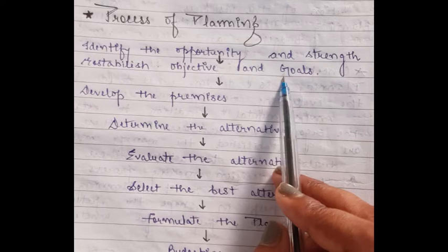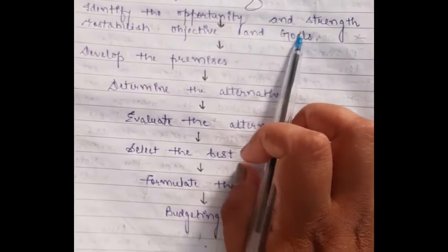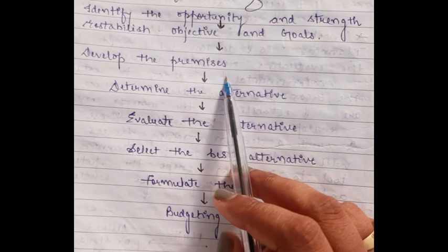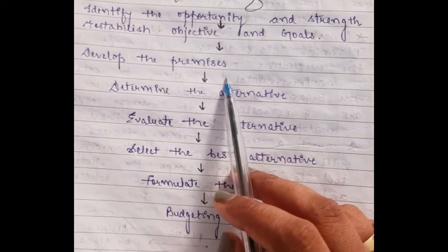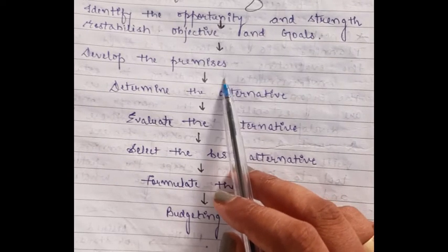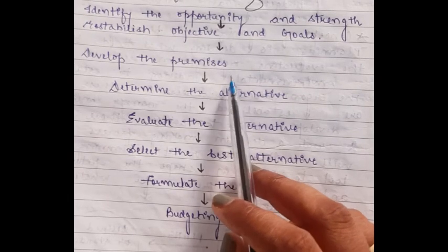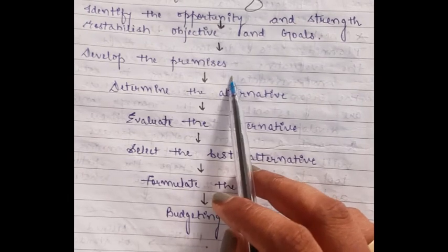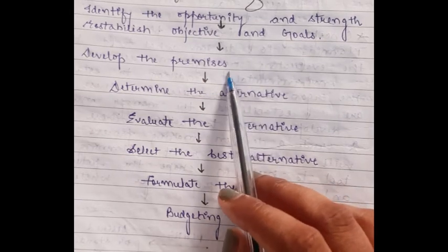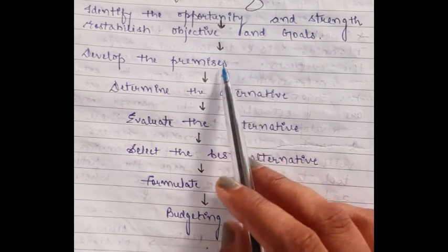You need to keep the objectives and accomplish what has been planned. The next step is to develop the premises. In this step, we are finding out various solutions and developing a proper framework for all these solutions.